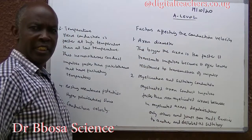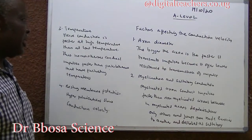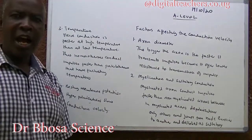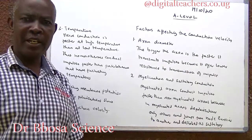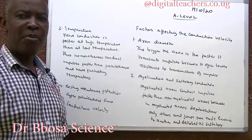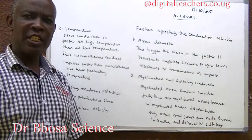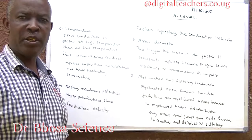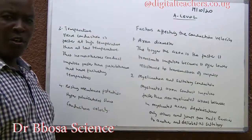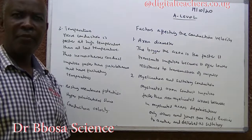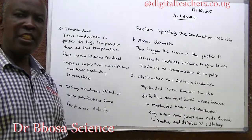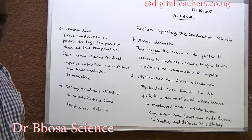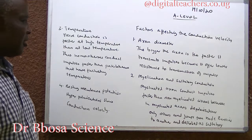Factors affecting conduction velocity. One: axon diameter. The bigger the axon diameter, the faster the conduction of impulses, because larger axons offer lower resistance to transmission of impulses.